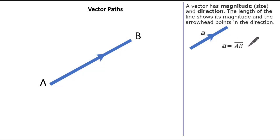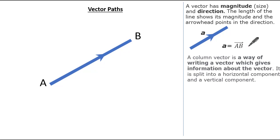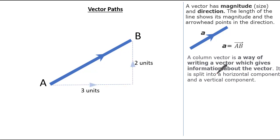We pronounce this as the vector AB. Now it's important to remember a column vector is also a way in which we write a vector, and gives us quite a lot of information about the vector itself. It's split into a horizontal component and a vertical component. So looking at this example, our vector can be written as 3, 2, illustrating 3 to the right and 2 up.